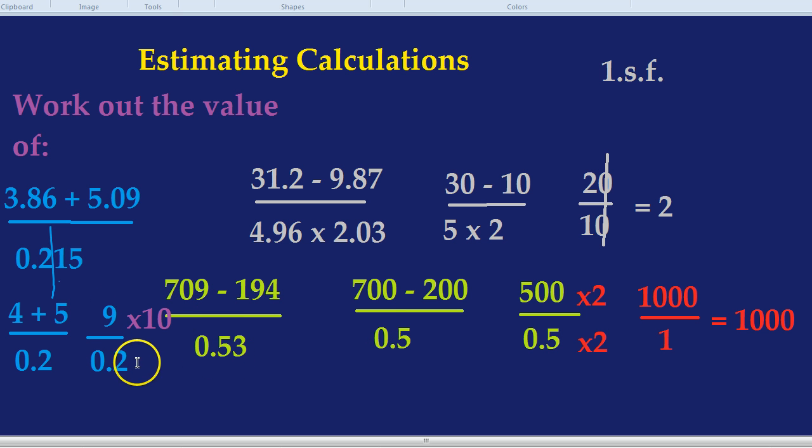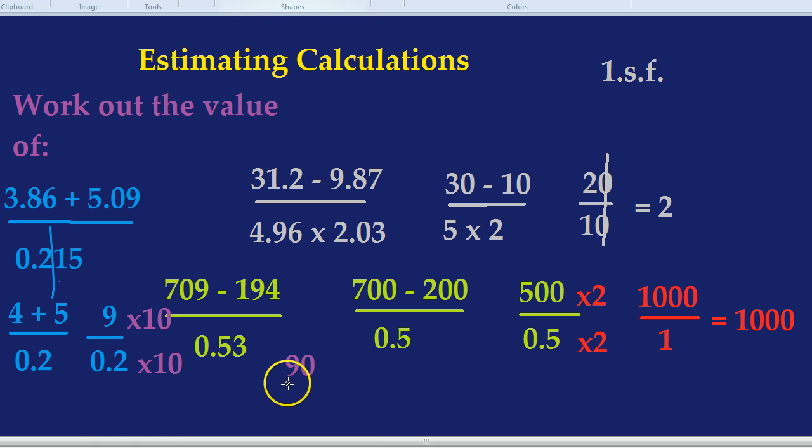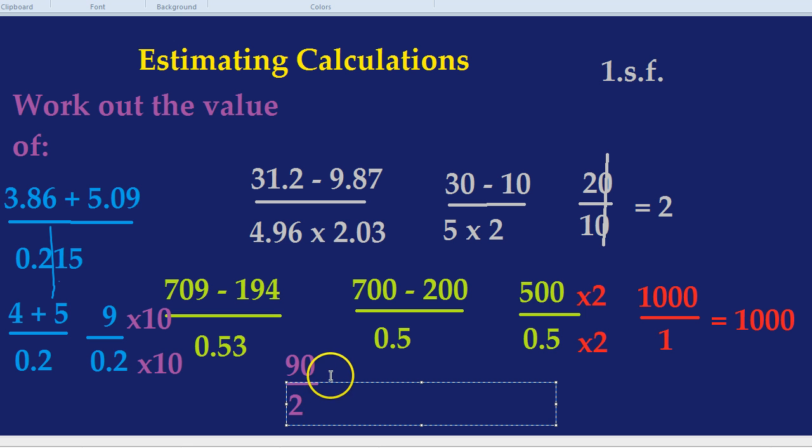And what do we get? The top line, 9 times 10 becomes 90. The bottom line, 0.2 times 10, you simply shift the decimal place and it becomes a 2. 0.3 times 10 is a 3. 0.6 times 10 is a 6. So 0.2 times 10 is a 2. And watch how much easier it became. 90 divided by 2 is indeed 45. Now there are three very quick estimates we did simply by rounding to one significant figure.